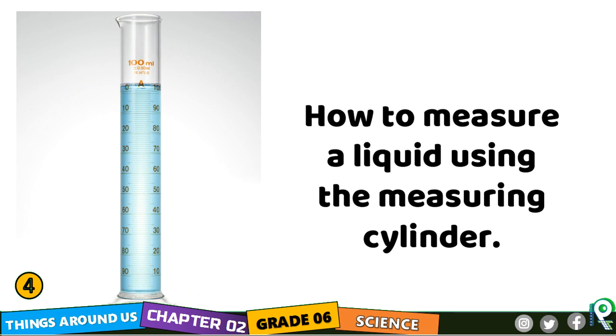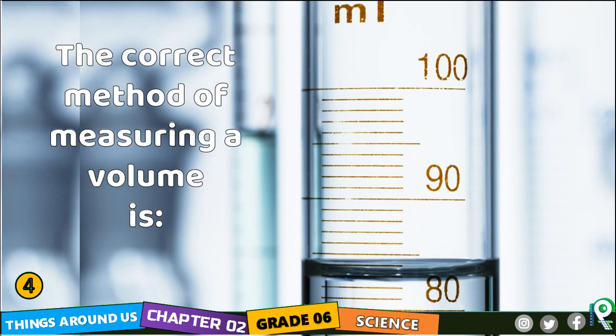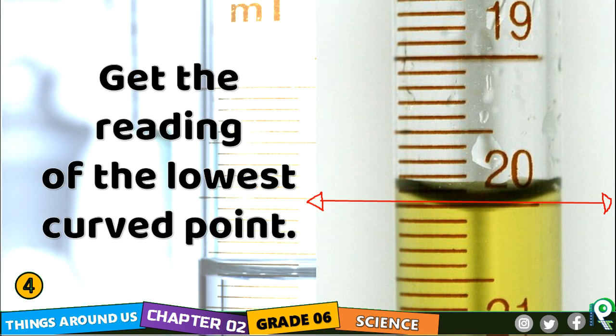How do you measure a liquid using the measuring cylinder? The measuring cylinder is used to measure liquids in the laboratory. The correct method of measuring volume is: when you put a liquid into the measuring cylinder, you will see a curved surface at the top — get the reading at the lowest curved point.